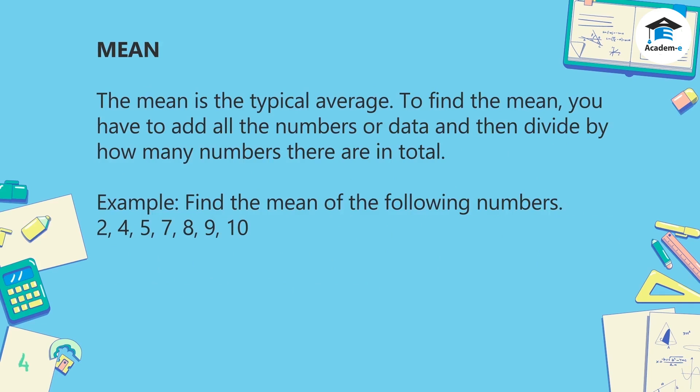Mean: the mean is the typical average. To find the mean, you have to add all the numbers or data and then divide by how many numbers there are in total. Example: find the mean of the following numbers — 2, 4, 5, 7, 8, 9, and 10.